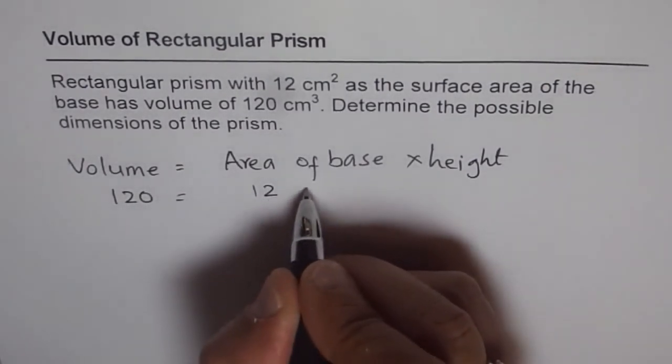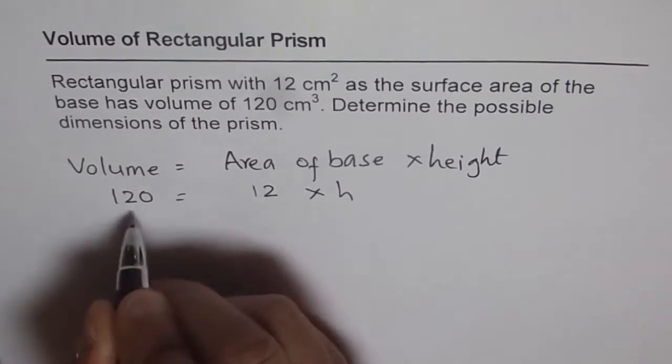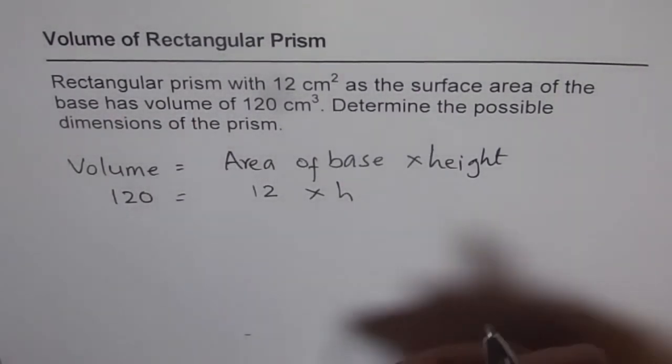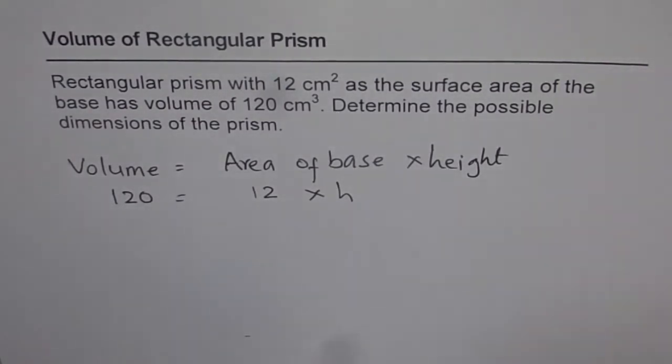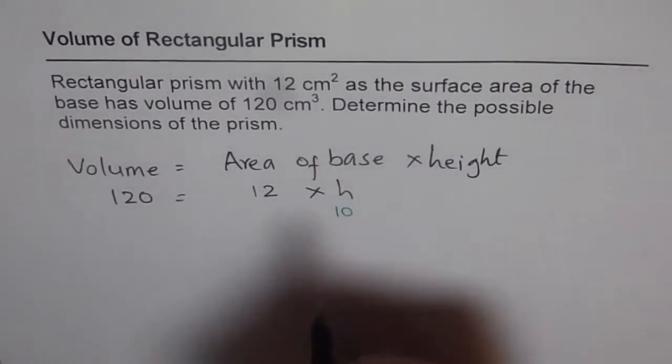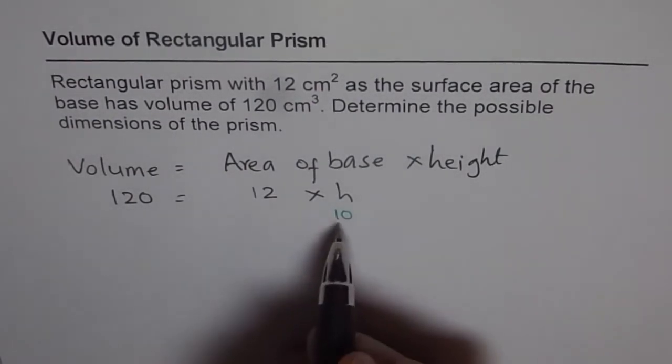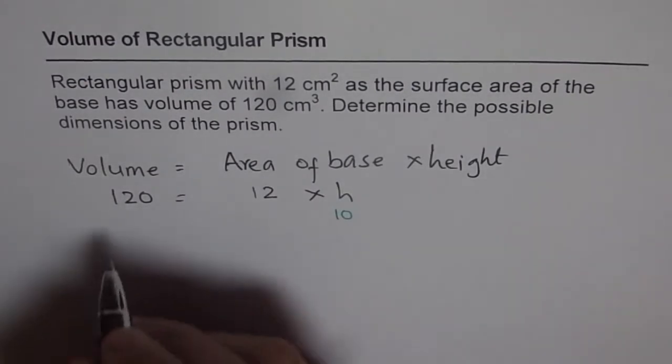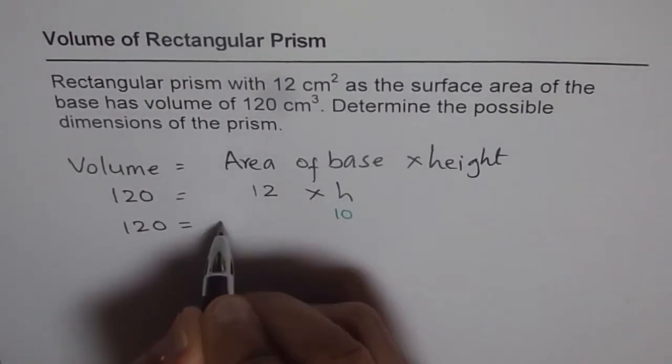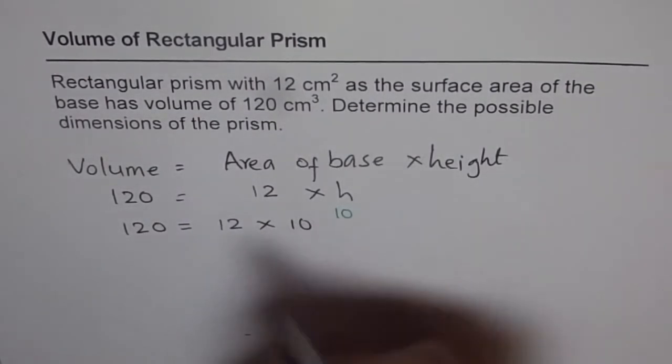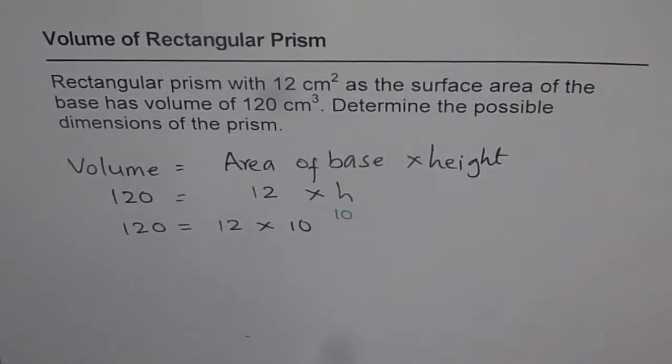Now, 12 times what will give you 120? Simple. 12 times 10 will give us 120. So height should be 10. That is absolutely clear. So we find that the height of our rectangular prism should be 10, since 120 equals 12 times 10. So if we compare, height is 10. That is one thing we found.